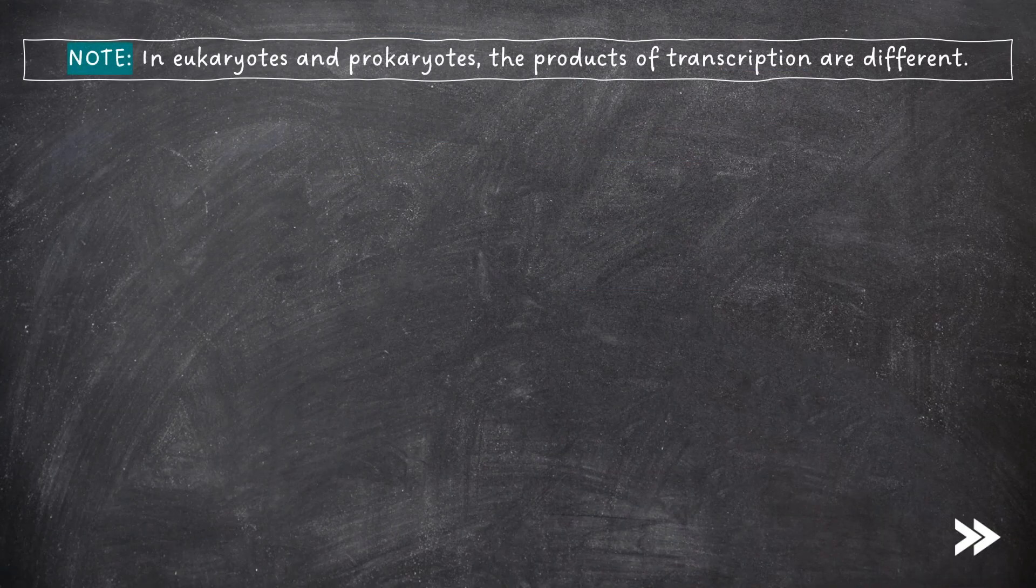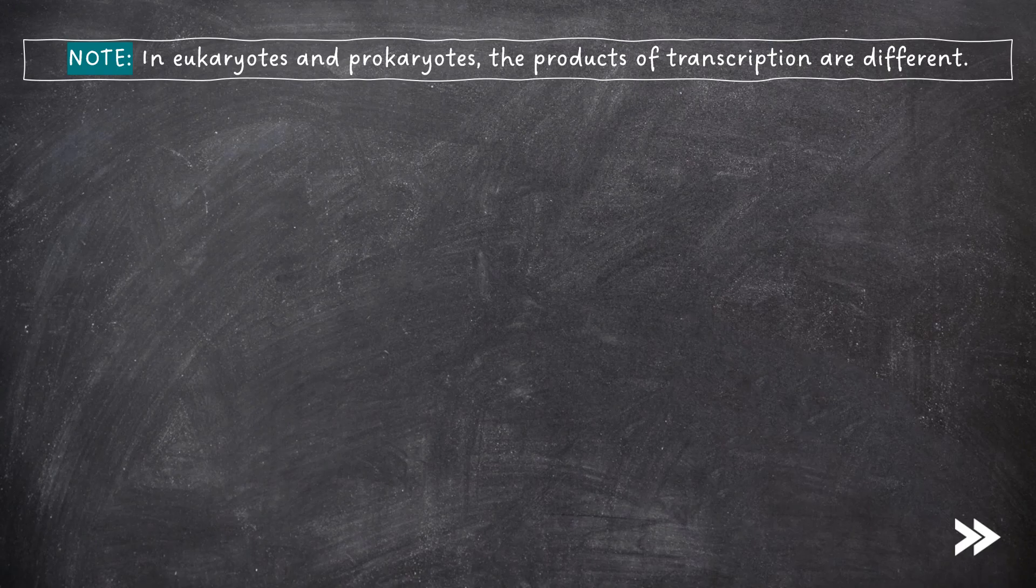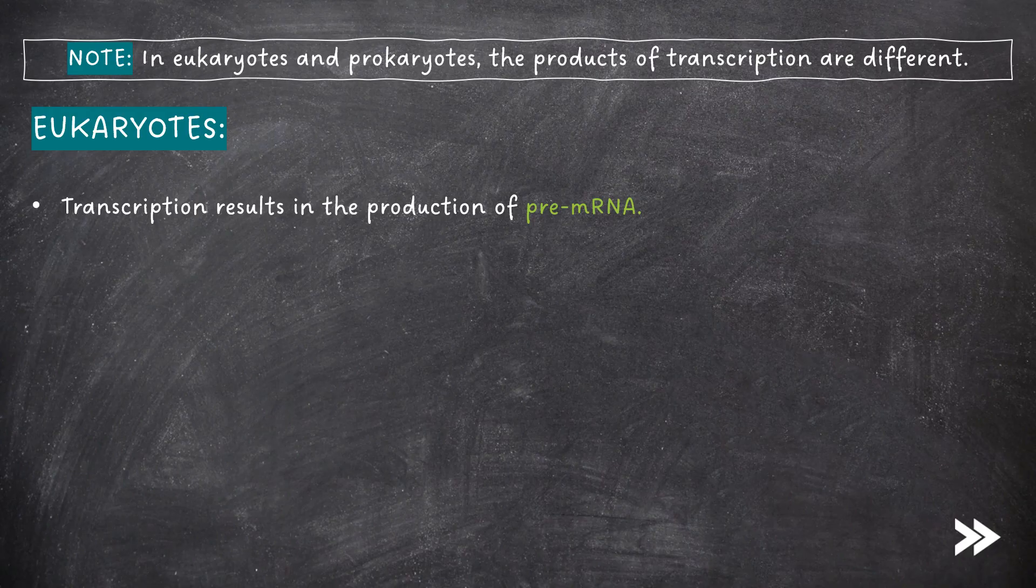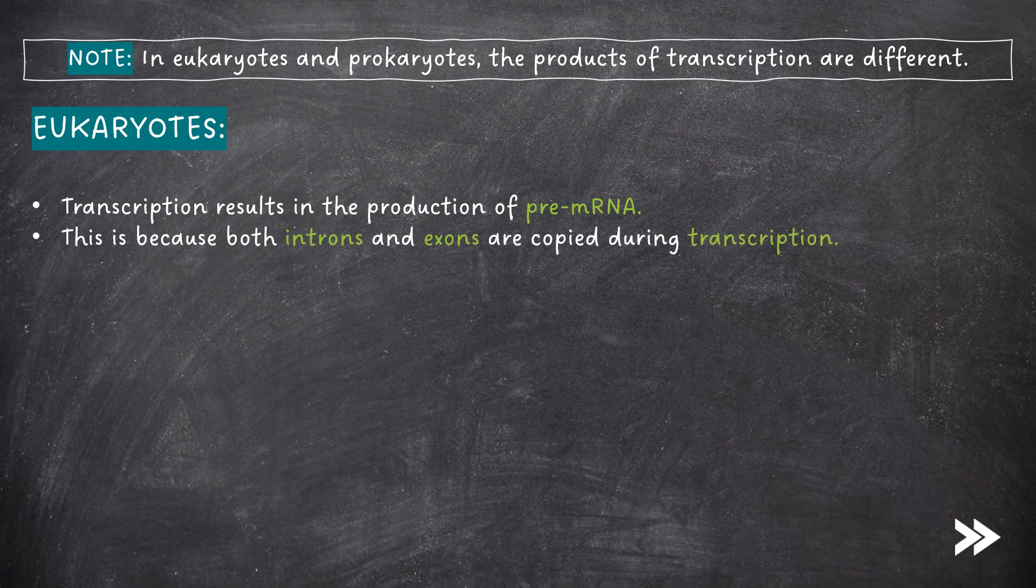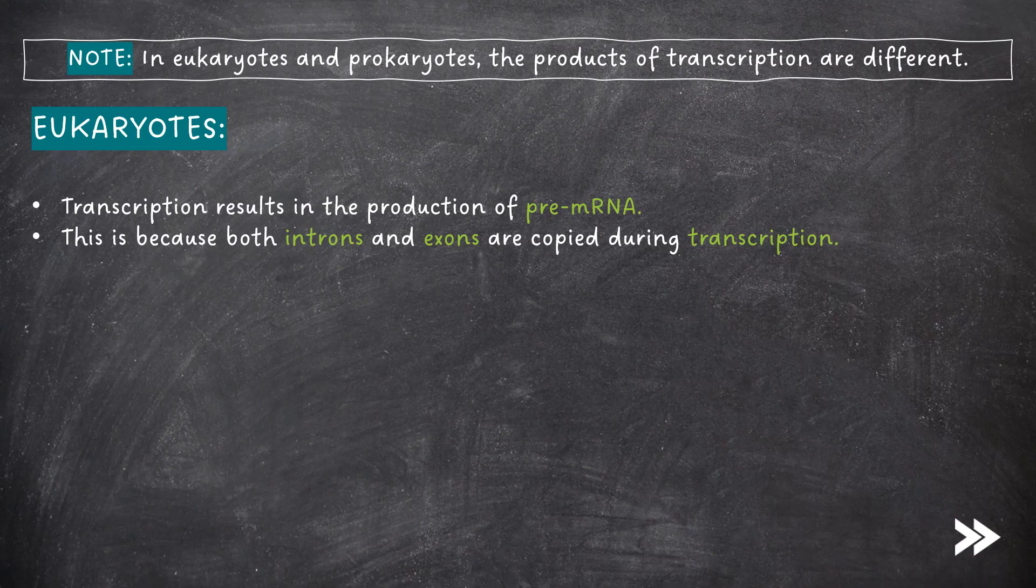Note that in eukaryotes and prokaryotes, the products of transcription are different. In eukaryotes, transcription results in the production of pre-mRNA. This is because both introns and exons are copied during transcription.